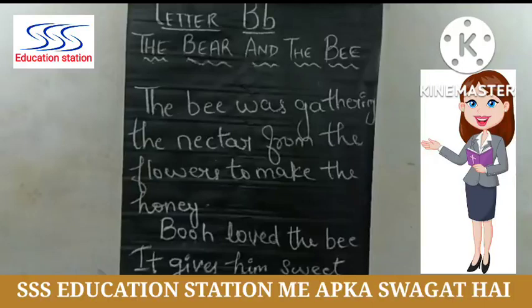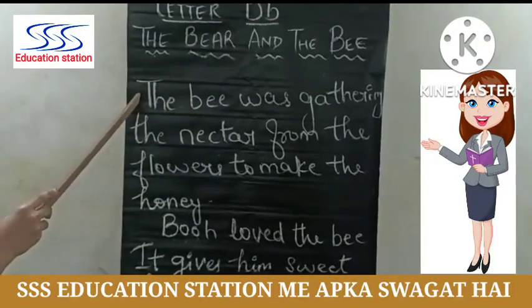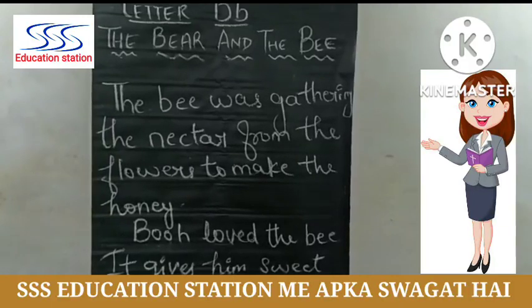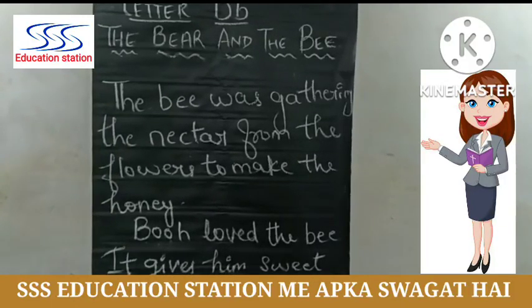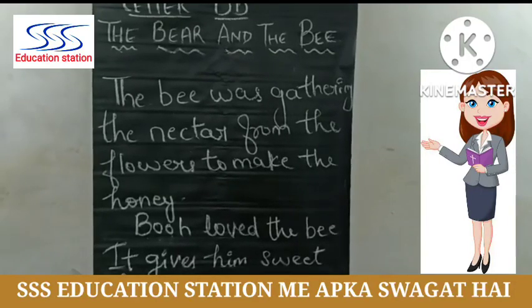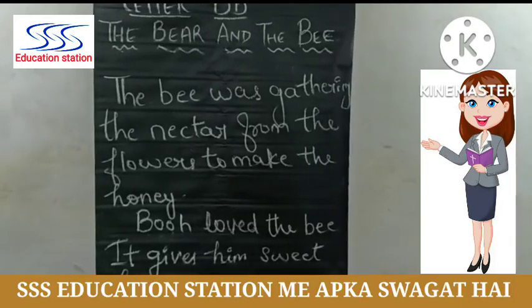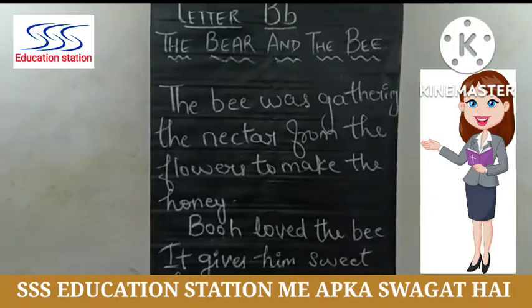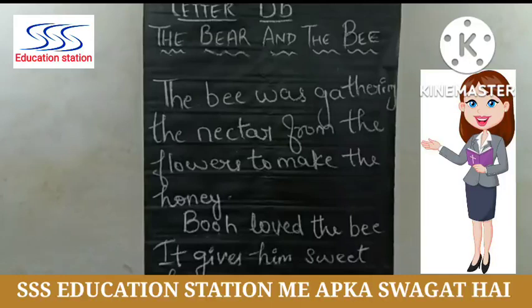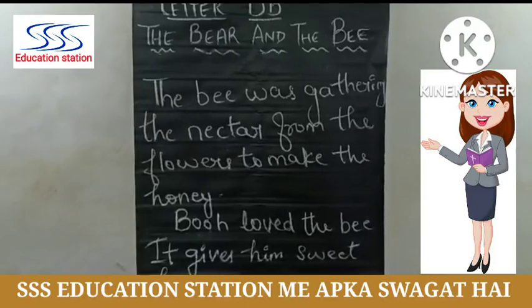Now we completed the story, The Bear and the Bee. Let's repeat it from the start. Boo is a small bear. He was playing with his ball. When he heard a strange sound, Boo followed the sound. Until he found a small bee — it was flying around the flowers making a buzzing sound. The bee was gathering the nectar from the flowers to make the honey. Boo loved the bee. It gave him sweet honey.